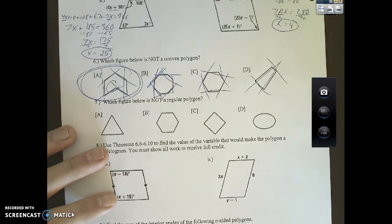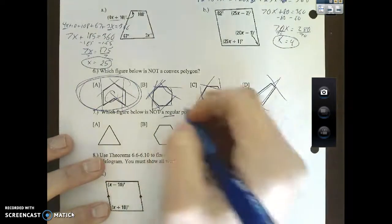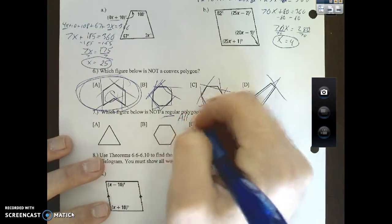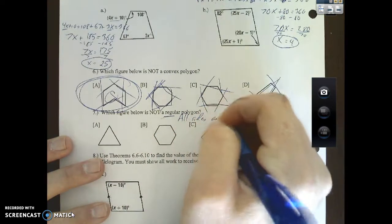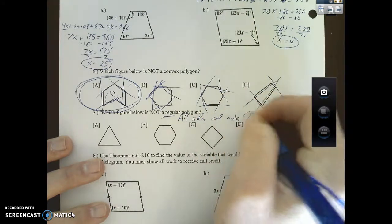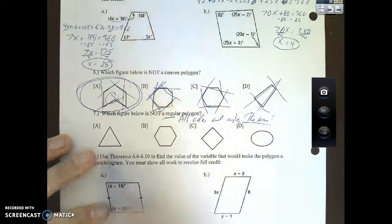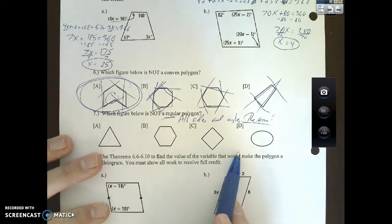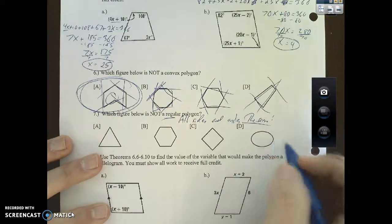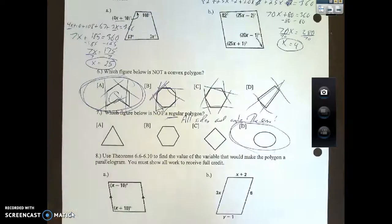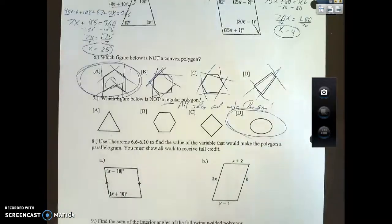Which figure below is not a regular? It's been a while since we've done regular. Regular means all sides and angles the same. So out of all these, which one is not regular? Well, there's actually one that's not even a polygon. Part D is curved, it's not even a polygon, it doesn't work.